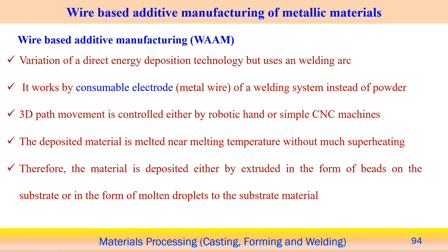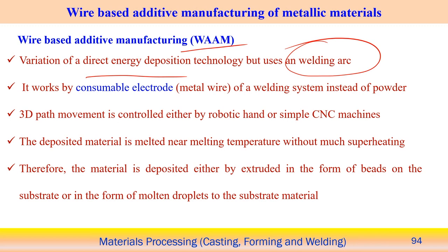Wire arc additive manufacturing (WAAM) is one type of wire-based additive manufacturing process where the heat source is an arc — a variation of the direct energy deposition process using a welding arc. In the GMAW process, a consumable electrode is used. Instead of powder, we use wire and control the three-dimensional movement of the welding torch.